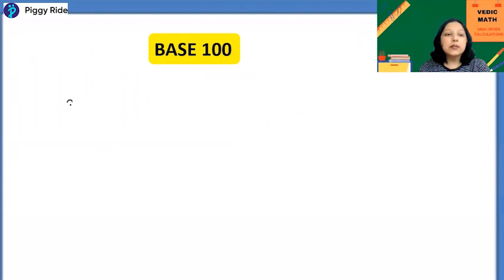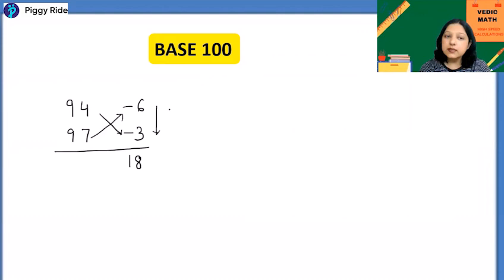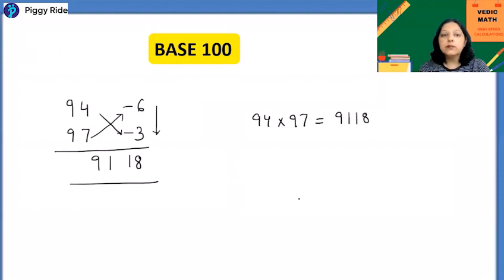Let's take another example. Suppose it is 94 and 97. 94 is 100 minus 6, so write minus 6 here. 97 is 100 minus 3, so write minus 3. Same method: 6 times 3 is 18. And 94 minus 3 or 97 minus 6, anything you do answer will be 91. So final answer of 94 into 97 is equal to 9118. So see, in few seconds only we have got the answer without actual multiplication.